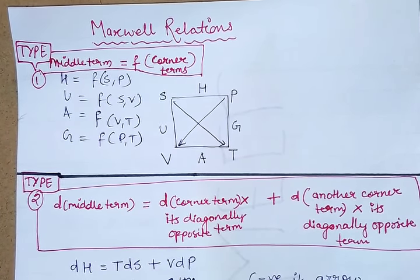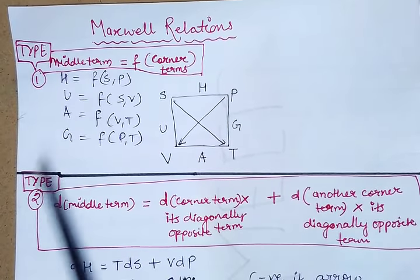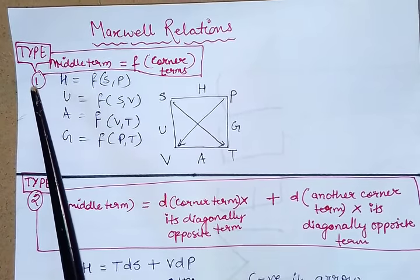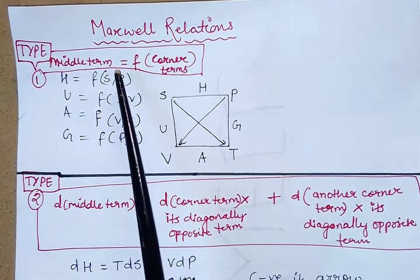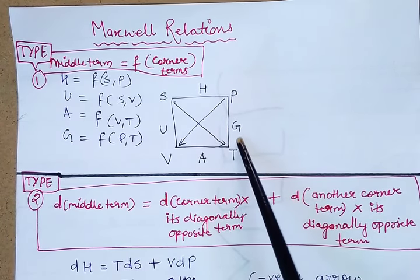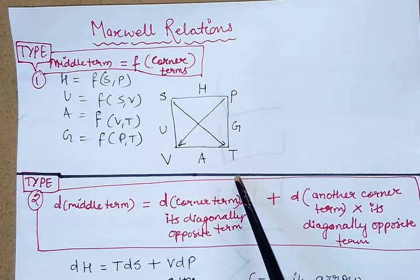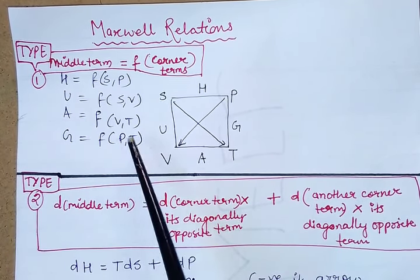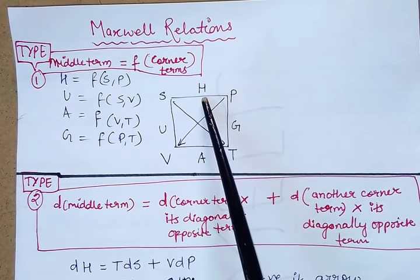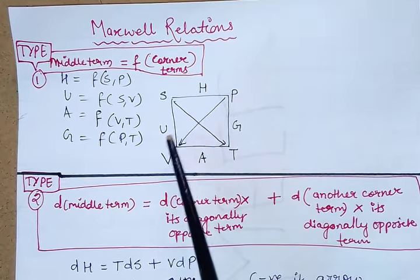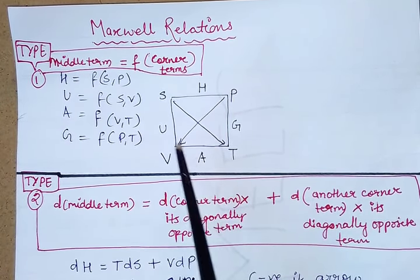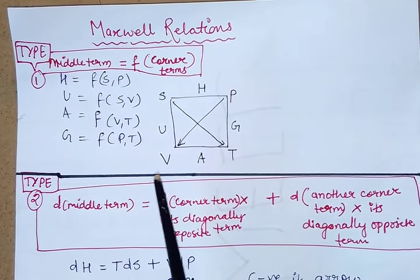There are a total of 20 Maxwell Relations including all types. For Type 1, the middle term is equal to a function of corner terms. For example, G is the middle term here, and it will be equal to a function of P and T. Applying this for all other sides: H equals function of S and P; U equals function of S and V; A equals function of V and T.